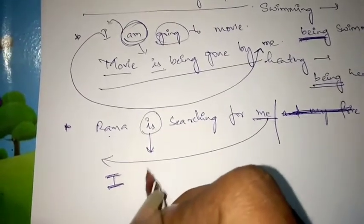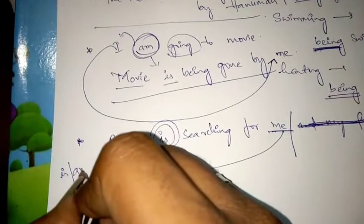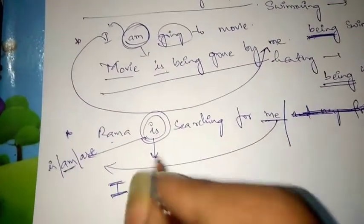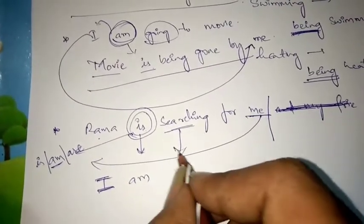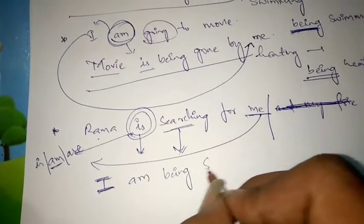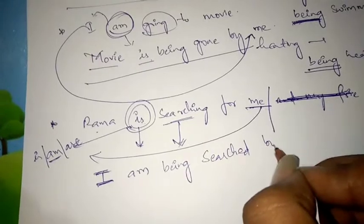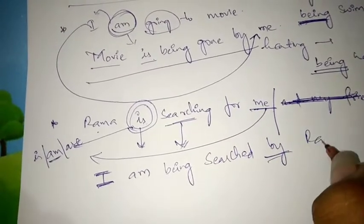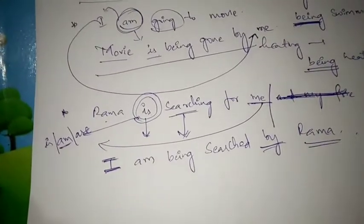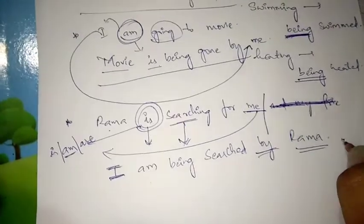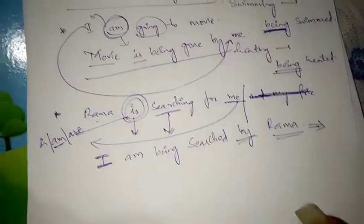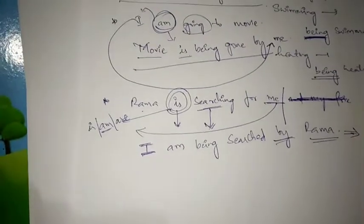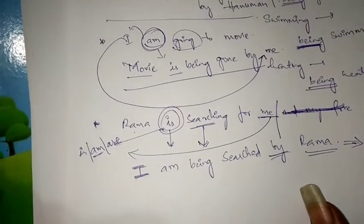The auxiliary verbs in present continuous tense are 'is', 'am', and 'are'. Since the subject is 'I', we use 'am'. Then convert V4 into V3: 'being searched'. So the full passive voice is: 'I am being searched by Rama.' You have to learn all these rules and keep them in mind so you can easily attempt questions in your exams.